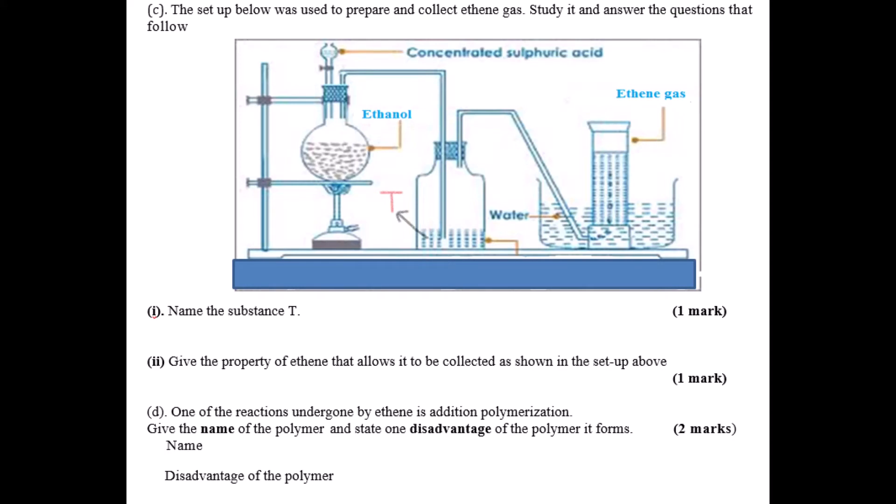Part C of the same question: you're given a setup for the preparation of a gas. You have concentrated sulfuric acid and ethanol in a round bottomed flask. The product is passed through another container with substance T. You have to name substance T, then give two properties that make ethene to be collected as shown. Ethene can undergo addition polymerization. You're supposed to name the polymer and state one disadvantage of using this polymer.